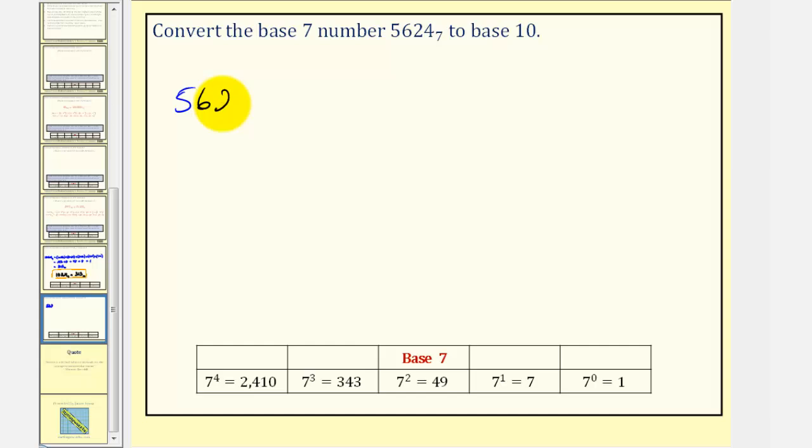So 5,624 in base 7 is equal to 5 times, this would be the 7 to the 3rd place value, or the 343's place value, plus 6 times, this would be 7 to the 2nd place value, or the 49's place value, plus 2 times 7 to the 1st, or 7, plus 4 times, this is the 1's place value.